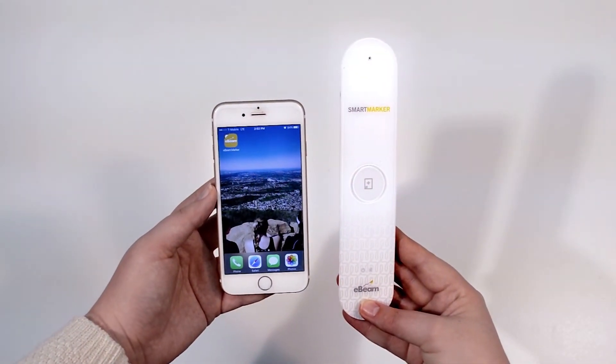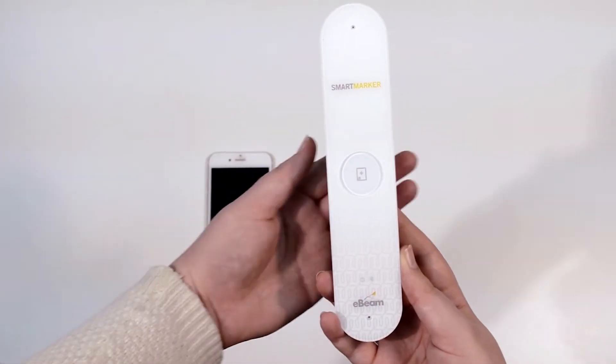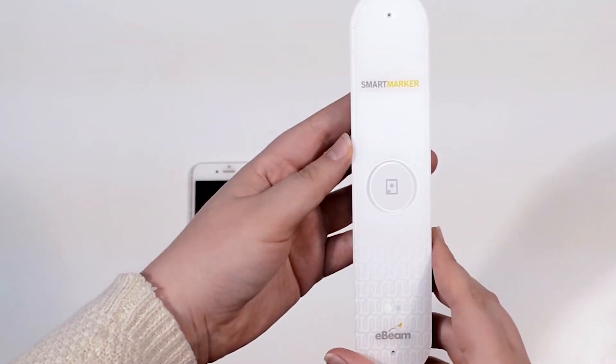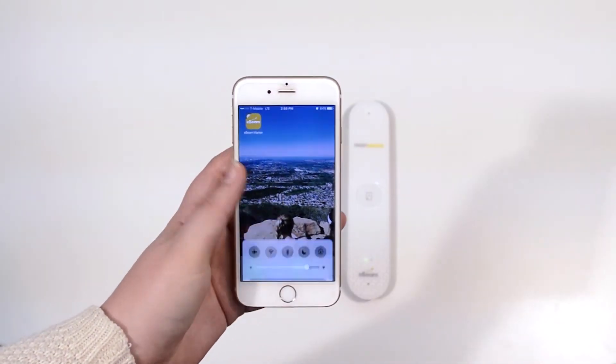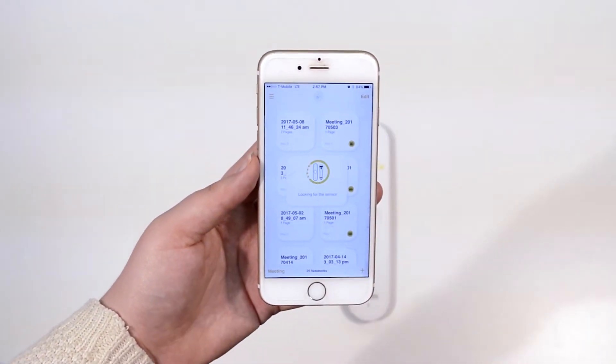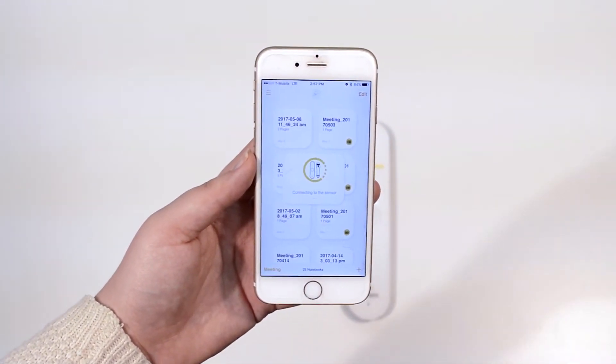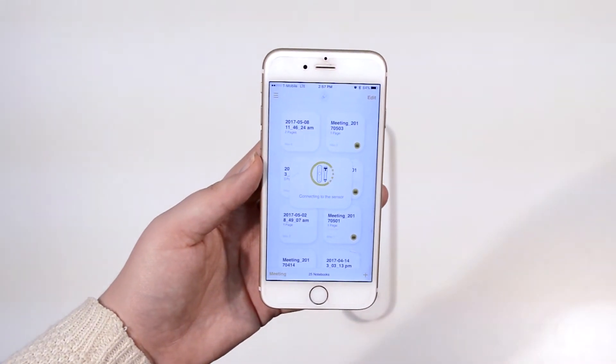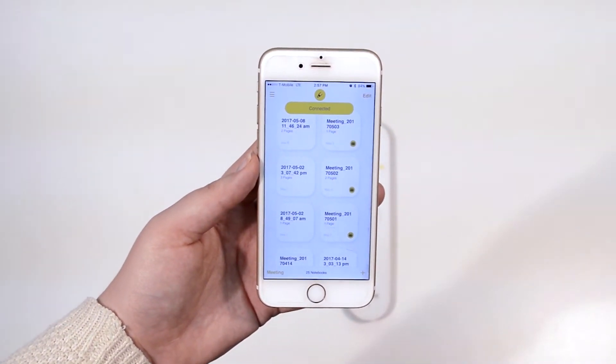To connect the SmartMarker to your smartphone or a Mac computer, first turn the sensor on. Make sure your phone or Mac computer has Bluetooth turned on. Then open the app. The sensor should automatically be found. Select the sensor in the list on the app and your sensor will be instantly connected.